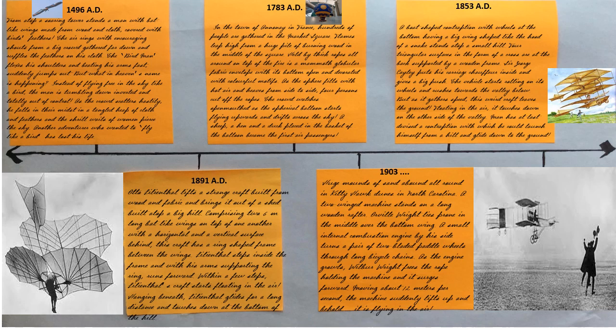1783 A.D. In the town of Annonay in France, hundreds of people are gathered in the market square. Flames leap high from a huge pile of burning wood in the middle of the square. Held by thick ropes all around, on top of the fire is a mammoth globular fabric envelope, with its bottom open and decorated with colourful motifs. As the sphere fills with hot air and sways from side to side, four persons cut off the ropes. The crowd watches, open-mouthed, as the spherical balloon starts flying upwards and drifts across the sky. A sheep, a hen, and a duck placed in the basket of the balloon become the first air passengers.